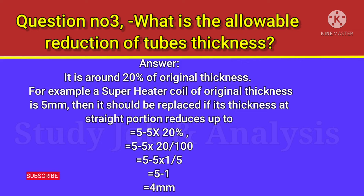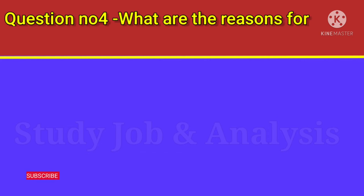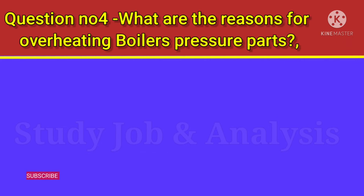For example, a superheater coil with an original thickness of 5 millimeters should be replaced if its thickness at the straight portion reduces to 5 minus 20 percent of 5 (i.e., 4 mm). Question number four: what are the reasons for overheating of boiler pressure parts?